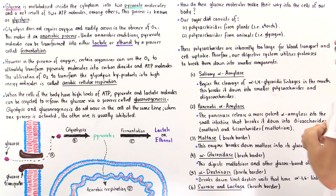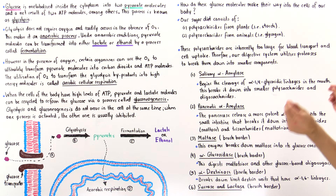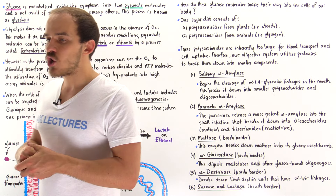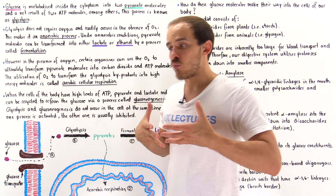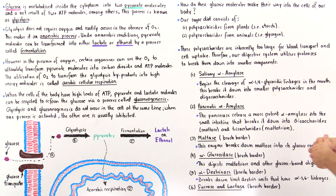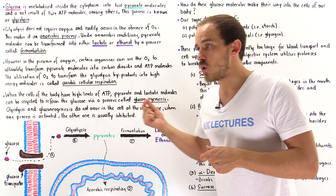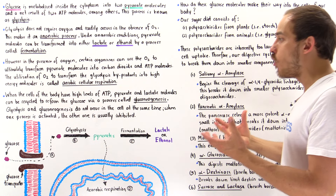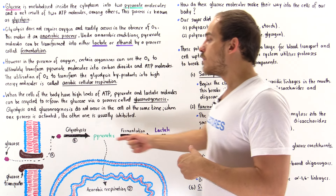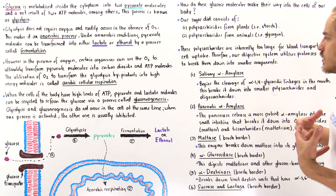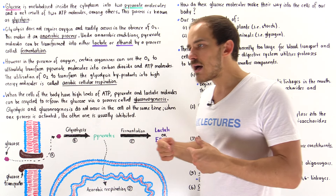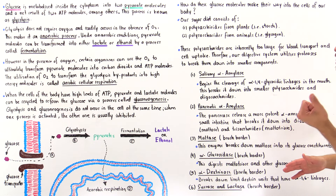These polysaccharides are inherently too large to fit into our cells, and they're too large to move around and transport in the blood plasma. So before these large polysaccharides make their way into the blood plasma and into our cells, these carbohydrates must be broken down into smaller components — in fact, into individual glucose molecules — before the cells can uptake glucose and store it as glycogen or break it down to form ATP.